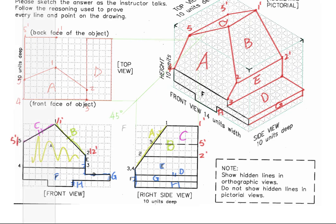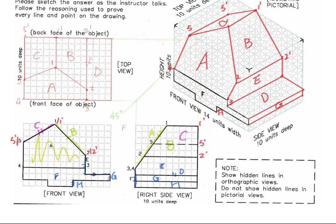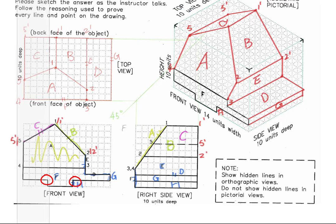Surface B involves 1, 2, 1 prime, and 2 prime. Once we have 1 prime and 2 prime connected, we can see the foreshortened surface B in the top. Don't forget the hidden features in the top. Once you have all of the normal surface edges marked in the top, remember to check the hidden lines. From the two corners, we can see the hidden features which must be marked as hidden lines in the top view.